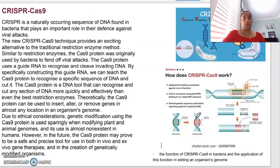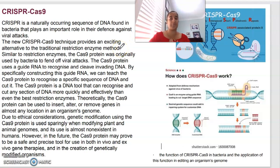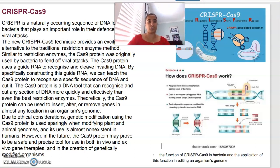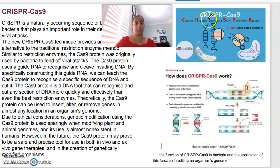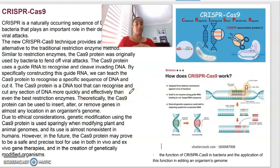CRISPR-Cas9 is a naturally occurring sequence of DNA found in bacteria, playing an important role in defense against viral attacks. CRISPR stands for clustered regularly interspaced short palindromic repeats, associated with protein 9. This technique provides an alternative to traditional restriction enzymes. Using a guide RNA to recognize and cleave invading DNA, we can teach the Cas9 protein to recognize specific DNA and cut it. The Cas9 protein can recognize and cut any section of DNA more quickly and effectively than the best restriction enzymes.